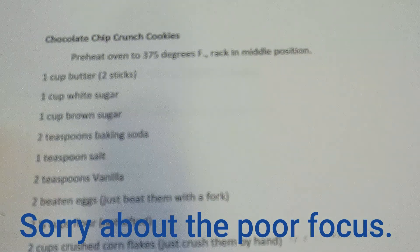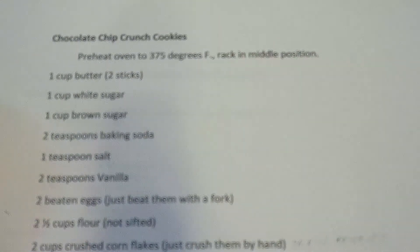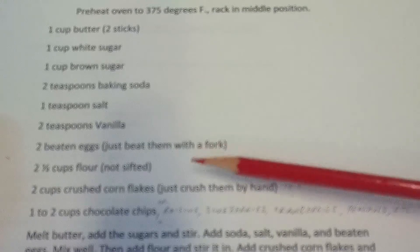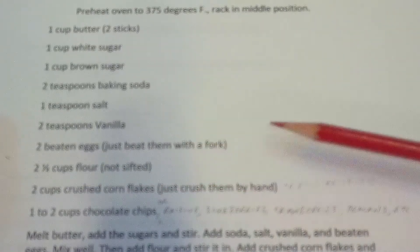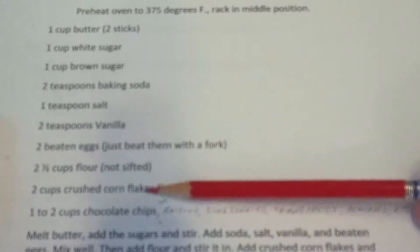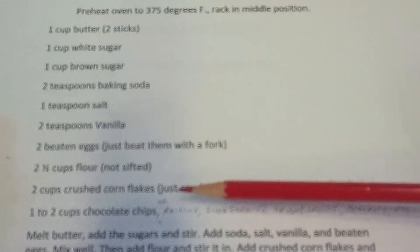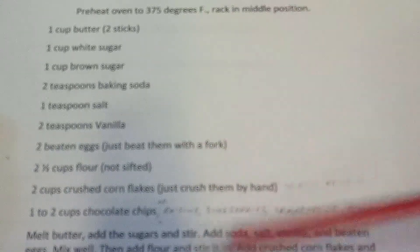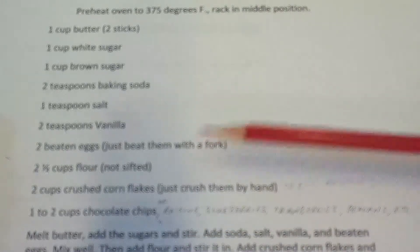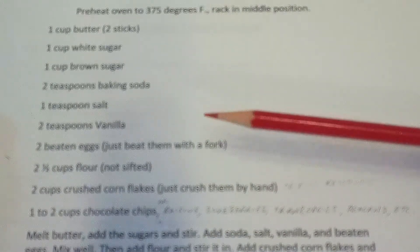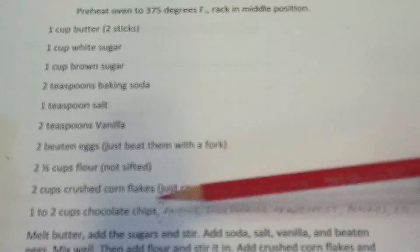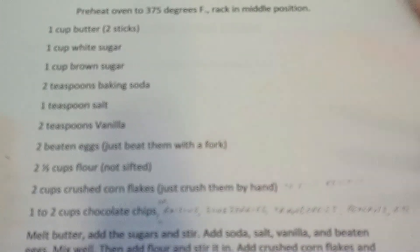Here we have our first recipe — chocolate chip crunch cookies. This recipe is already a variation from a different recipe. Where it varies is it says two cups of crushed corn flakes, crushed by hand. Originally, that was two cups of quick oats. The lady who made this recipe originally discovered she didn't have oatmeal but had lots of corn flakes, so she substituted. You can take this recipe and substitute oatmeal back for the corn flakes.